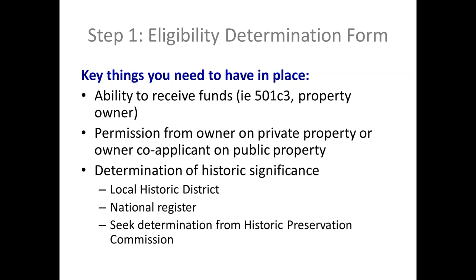When it comes to applying for a historic preservation project, if you don't have a building in a local historic district or on the national register, you need to come before the historic preservation commission to have them determine whether the building is historically significant. It's historically significant artifacts and buildings that can possibly qualify for CPA historic preservation funds. Note that it's not just a building — it's also artifacts. CPA applications have come in for the restoration and scanning of historic voter records, and the restoration of a bas relief at the central library. These items also need to be determined historically important by the historic preservation commission.